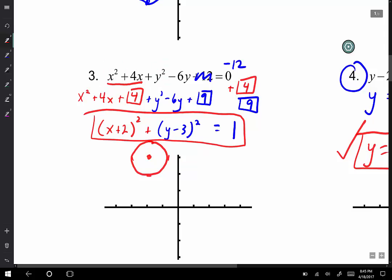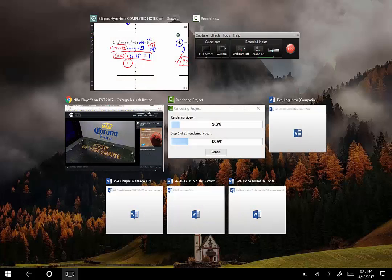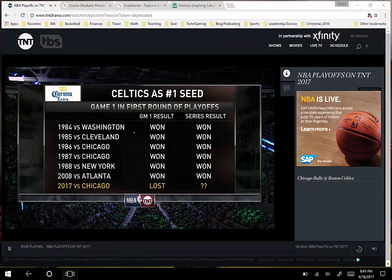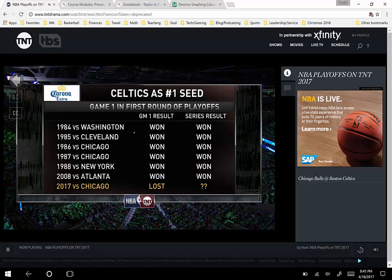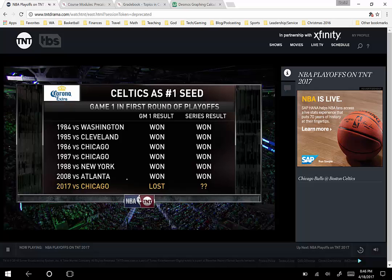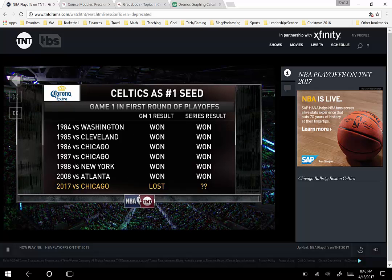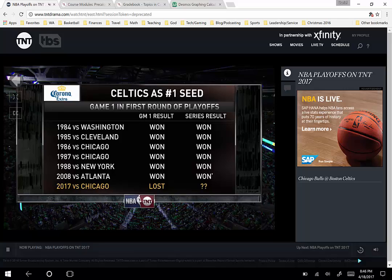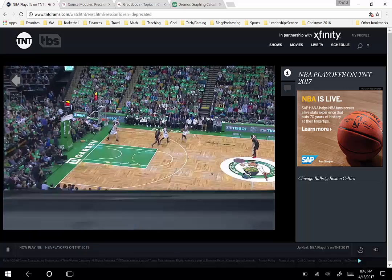Let's go back and see how this Bulls game is going. Oh, last time the Celtics were a 1 seed. They've won every single time they were 1 seed, so Chicago is going for the upset. Jimmy Butler, Rajon Rondo, Dwyane Wade and company.